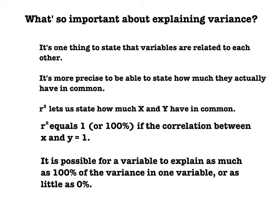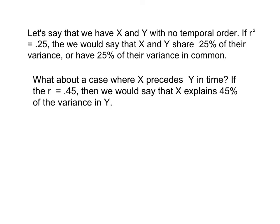R-squared equals 1, or 100%, if the correlation between X and Y is equal to 1. So it's possible for a variable to explain as much as 100% of the variance in one variable, or as little as 0% of the variance. It can go anywhere in between those two values.